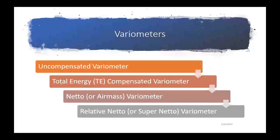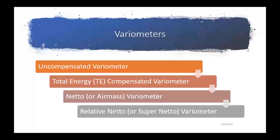Moving on to variometers — there are uncompensated variometers, total energy compensated variometers, a netto or air mass variometer, and a relative netto or super-netto variometer.